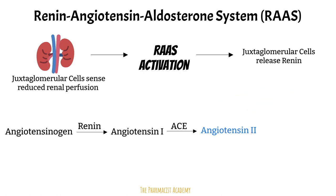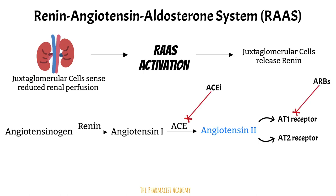Angiotensin 2 then binds to angiotensin 2 type 1 and type 2 receptors. ACE inhibitors inhibit the ACE enzyme, while ARBs prevent the binding of angiotensin 2 to the type 1 angiotensin 2 receptors. As we will see next, the type 1 receptors are the main ones responsible for the immediate and chronic effects of angiotensin 2.